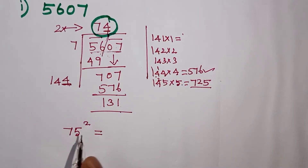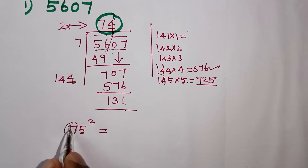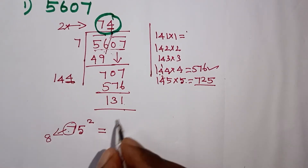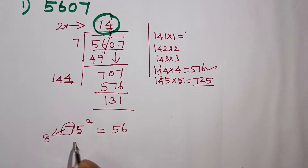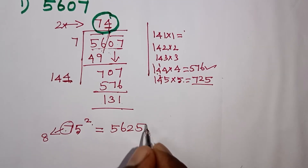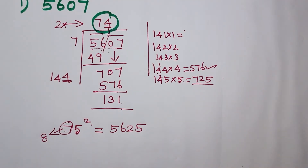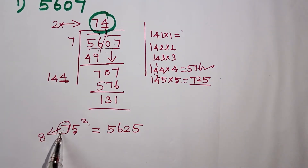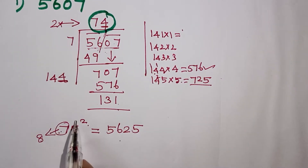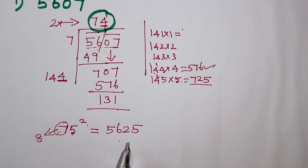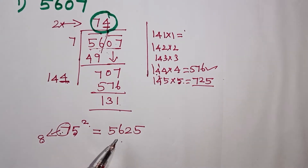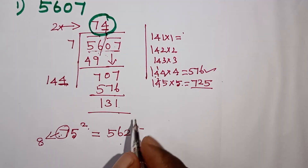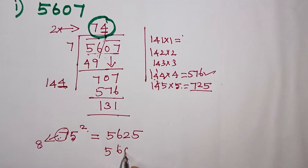75 squared is easy to find. If you have 7, the next number is 8, so 7×8 is 56. And 5 squared is 25. So 75 squared is 5625. Using the short trick: if any number ends in 5, the last two digits are always 25, and the first part is the number times the next number.